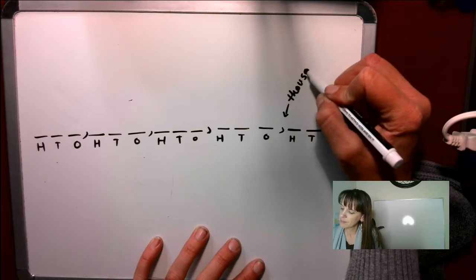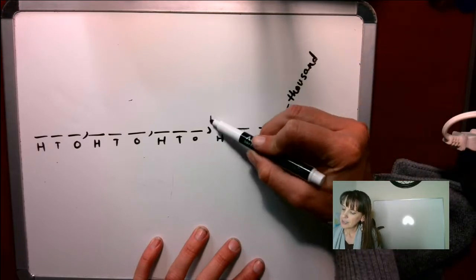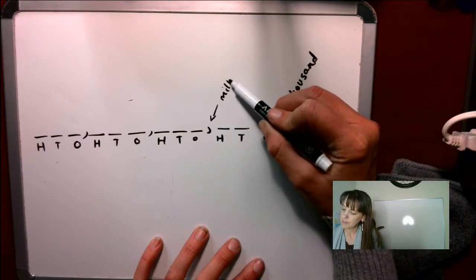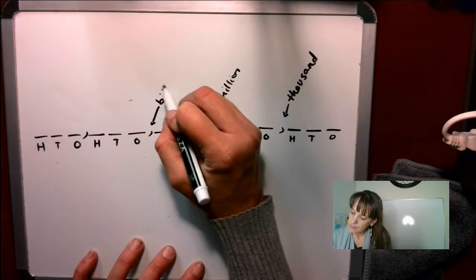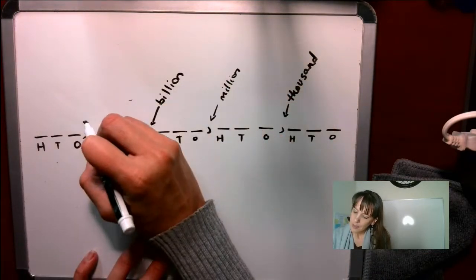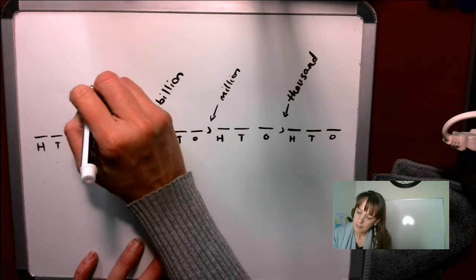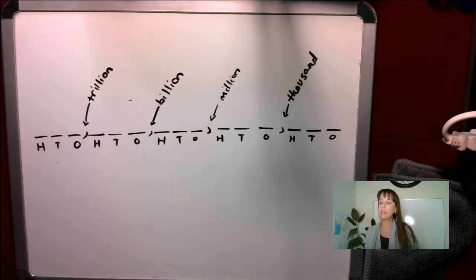Alright, so the deal with this is, and guys, if you haven't already, open up your notebook. Turn to the notes section. Write down lesson 12 and copy this guy down, okay? It'll be really helpful for later. This is thousand. This is million. This is billion. This is trillion.